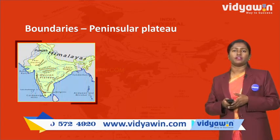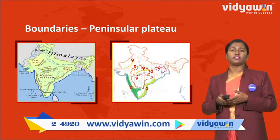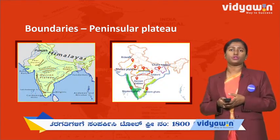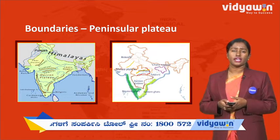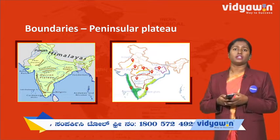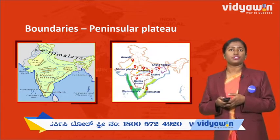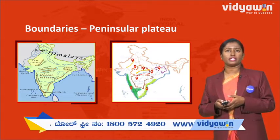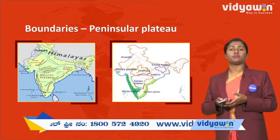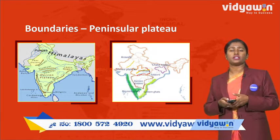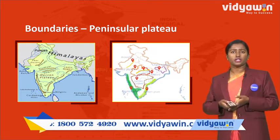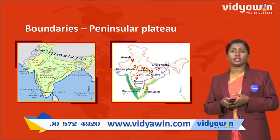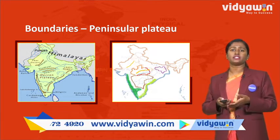For example, we have the Aravallis in the south west, and to the east we have the Chotanagpur Plateau and Sadhpura Ranges, and towards the south of India we have the Eastern Ghats.